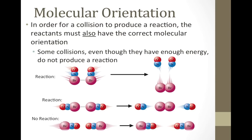In order for a collision to produce a reaction, the reactants must also have the correct molecular orientation. The molecules need to line up in certain ways to react when they collide. Even though some collisions have enough energy to produce a reaction, the way the molecules line up to collide may be out of whack.